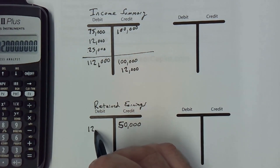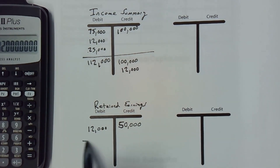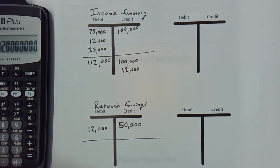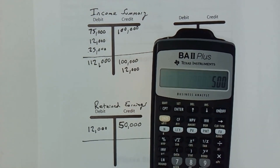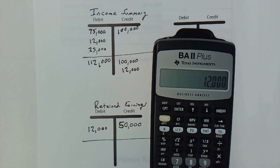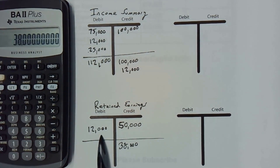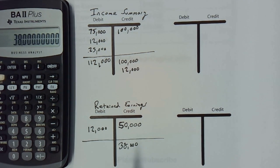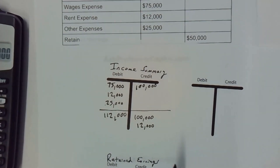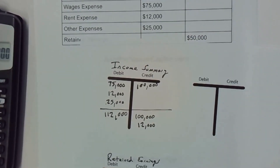Our offsetting debit is going to be to retained earnings for twelve thousand. We know we had a beginning balance of fifty thousand credit in retained earnings. Using the calculator: fifty thousand minus twelve thousand — because it's a debit — means our new retained earnings balance is thirty-eight thousand. Our retained earnings have gone down because we had a net loss of twelve thousand dollars. Net losses reduce our retained earnings. If we were to pay out any dividends it would also come out of retained earnings. That is how you do the closing entries when there is a net loss.